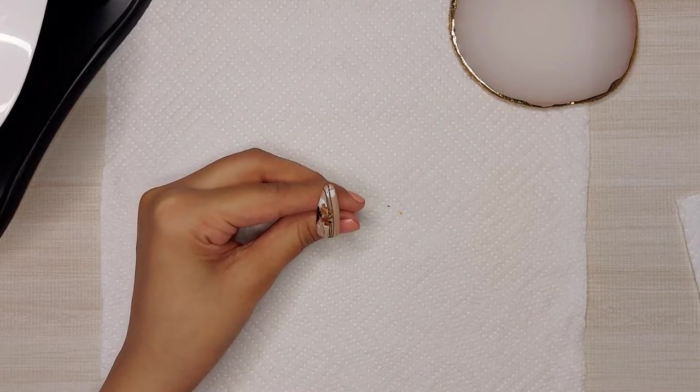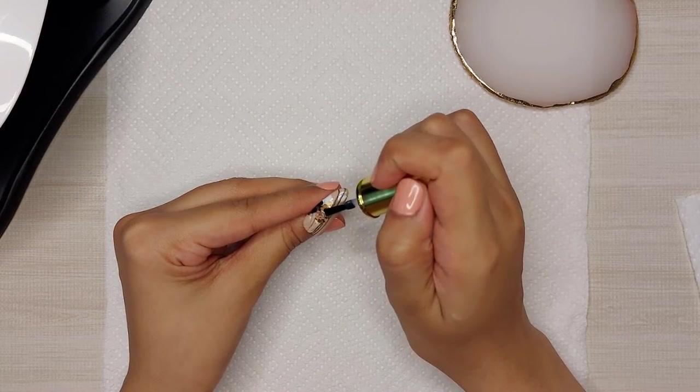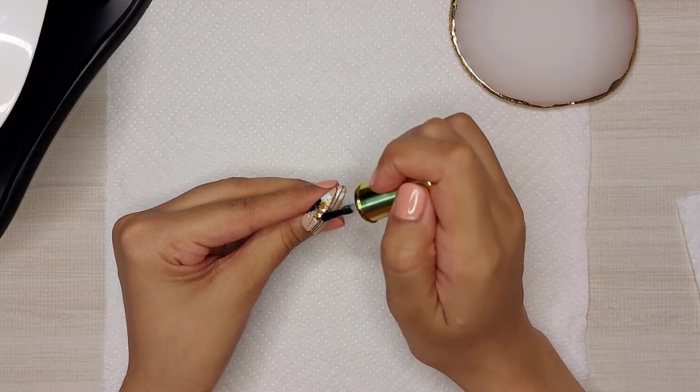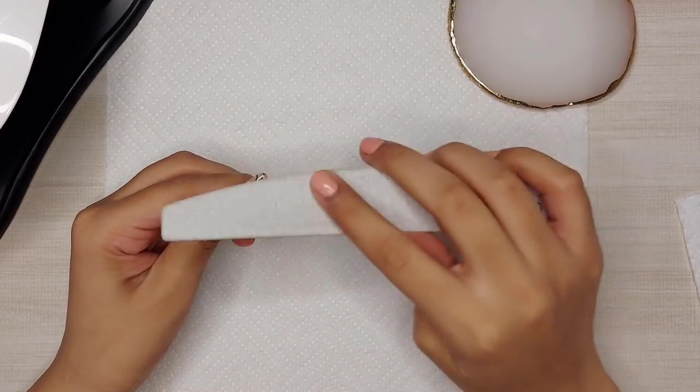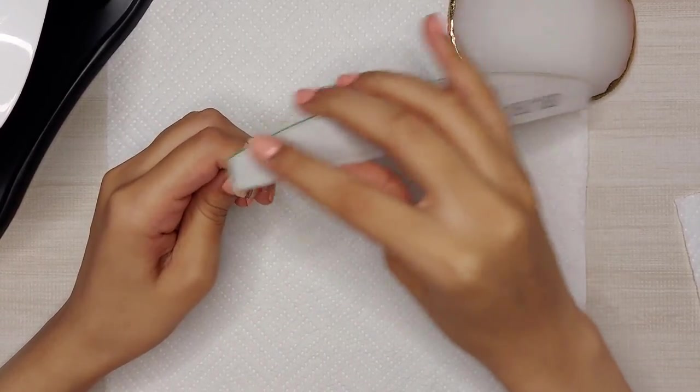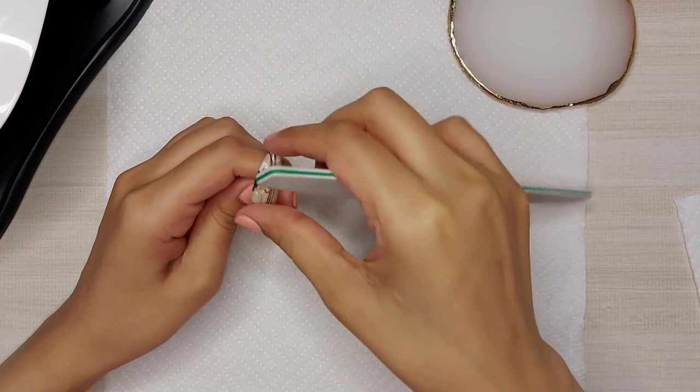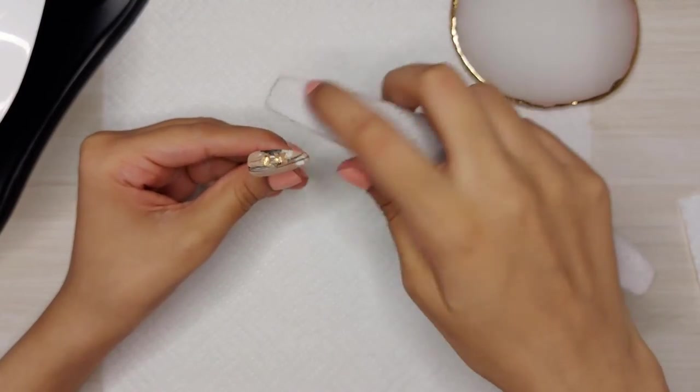So after sticking some more flakes on this nail, I'm applying top coat to secure them and then I'll cure it for 60 seconds. So after curing it I noticed that the part where I applied flakes was a bit bumpy so I'm filing it down to make it smooth.